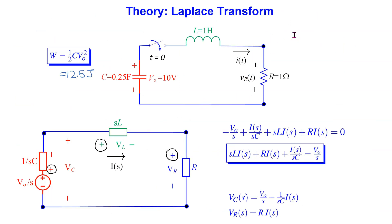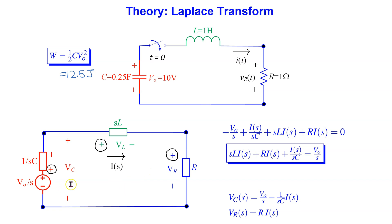Let us look at how to theoretically determine the natural response. We consider an RLC circuit with a 0.25 farad capacitor, 1 henry inductor, and 1 ohm resistor. The capacitor has an initial voltage of 10 volts, meaning the energy stored in the capacitor is 12.5 joules. We transform this time domain circuit into the S domain. Our goal is to write the circuit equations in the S domain but not to solve them by hand, since we will use Mathematica to do the calculations. In the S domain, the polarity and magnitude of the initial voltage across the capacitor is captured by a DC voltage source.